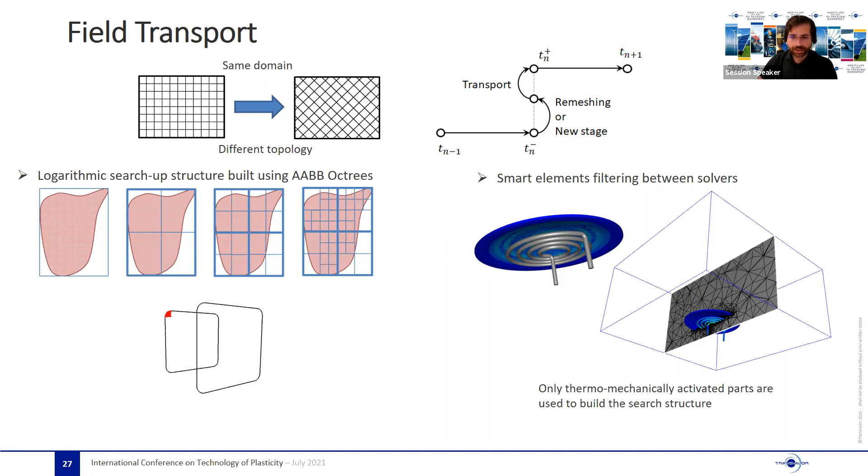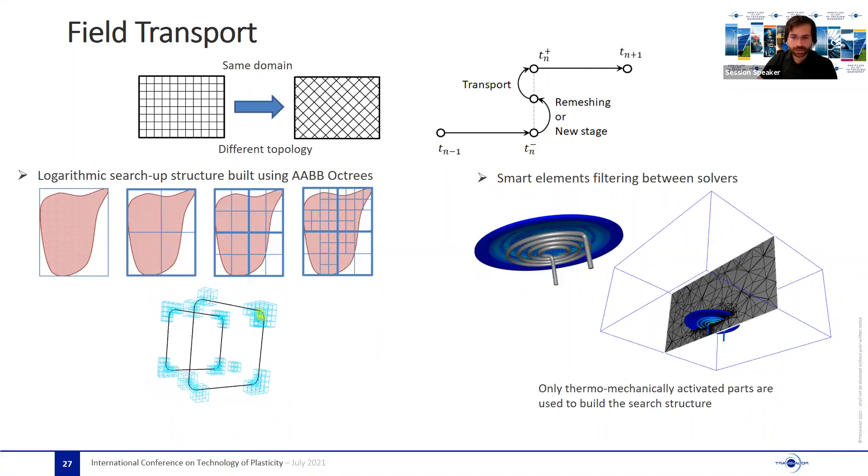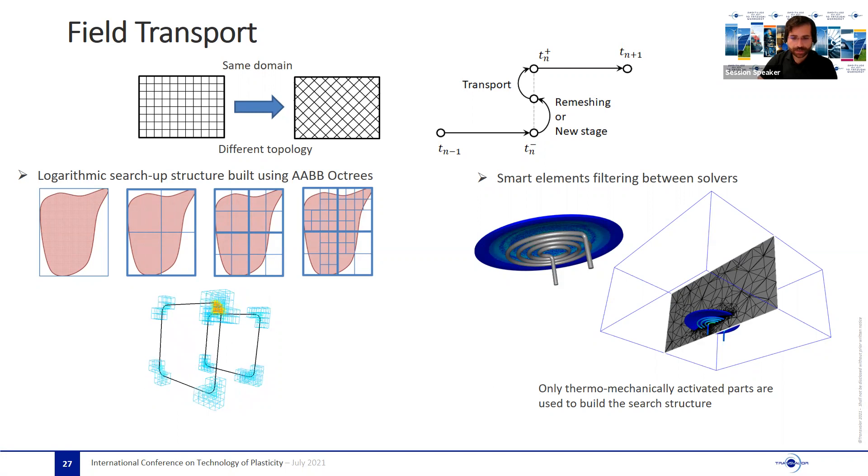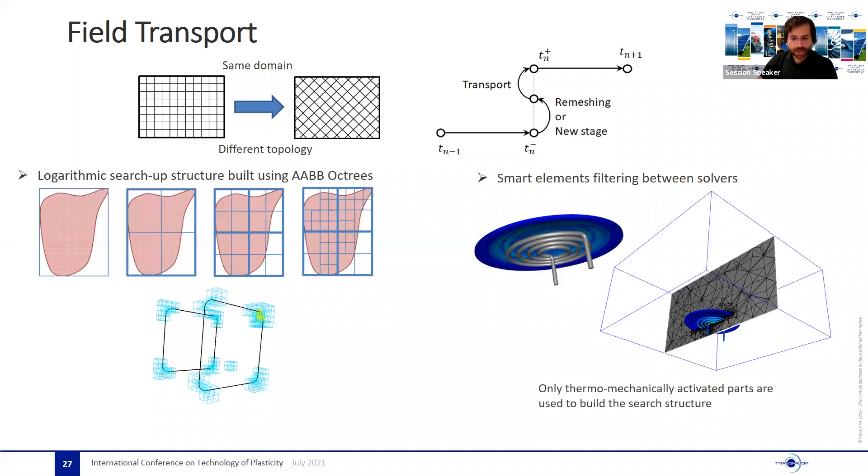We had in mind that field transport is a delicate step that can introduce numerical diffusion to the results. Keeping these two points in mind, we developed a transport library in which several methods can be used for building up the search structure, among which the most efficient one was the logarithmic octrees. We introduced as well the possibility of filtering unnecessary elements, in this case, for instance, the air elements, as well as dedicated transport methods for different kind of field data to minimize the numerical data diffusion.